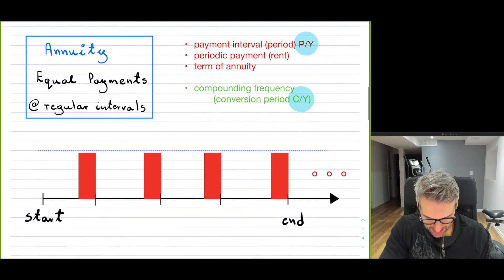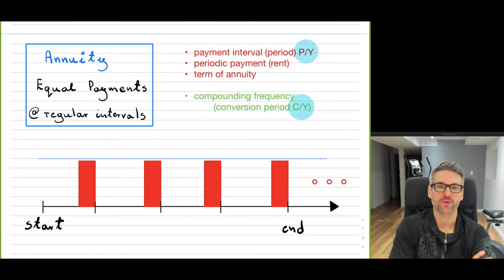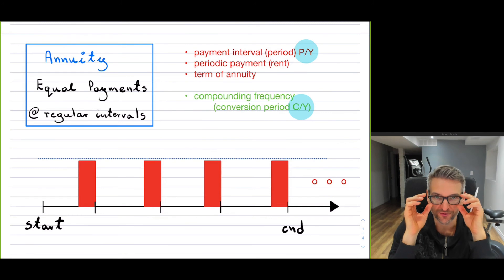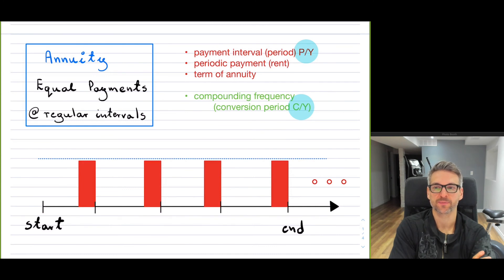So annuities in general — an annuity is basically a set of equal payments at regular intervals. Those payments can be paying off your car loan, paying off your mortgage, if it's exactly the same amount, or paying off a credit card. The key thing is they have to be equal payments, and they have to be spaced out at regular intervals.